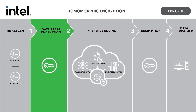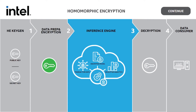Next, we prepare the data and inference model. This typically involves encoding the data and the model. Once the data is prepared, it is encrypted using the public key. Once the data and model are encrypted, they are uploaded to the cloud for secure inference. Secure inference is performed on encrypted data using the encrypted model, which generates encrypted results.